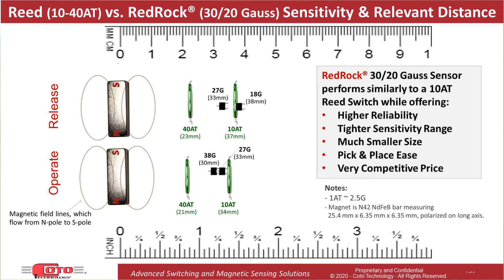Shown are the min and max limits for the reed and RedRock sensor. In general, the higher the sensitivity, the further the distance, which gives more flexibility to the design engineer. In this scenario, you can see both perform similarly when it comes to magnetic distance. Specifically, the 10 AT reed switch has a release distance of 37 millimeters and an operate distance of approximately 34 millimeters, while the RedRock 30-20 Gauss operate and release distances are 38 and 33 millimeters respectively.